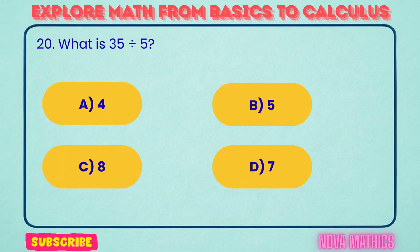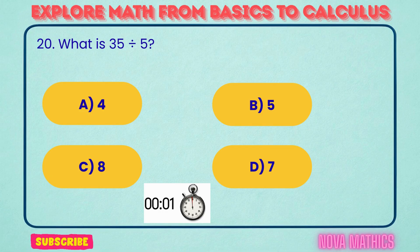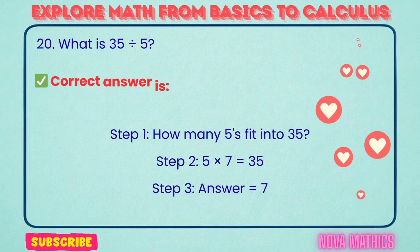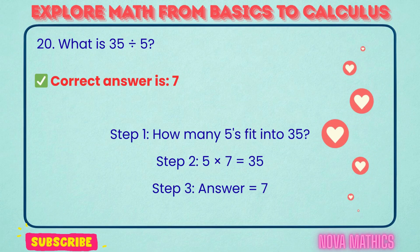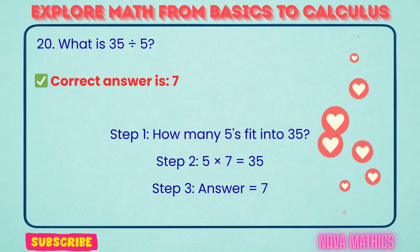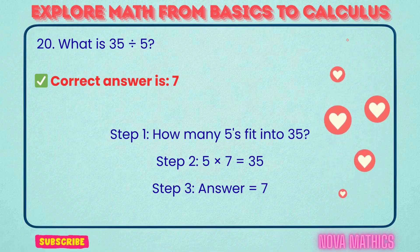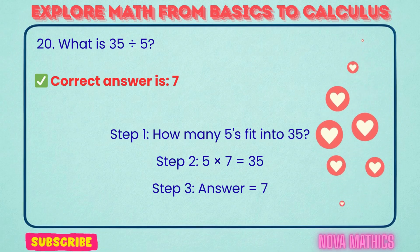20. What is 35 divided by 5? Correct answer is 7. 35 divided by 5 equals 7. We find this because 5 times 7 is 35.